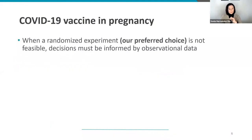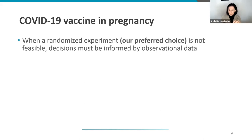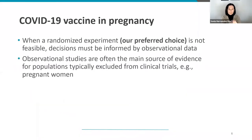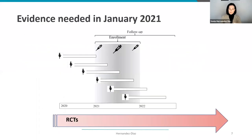So when there is no data from randomized trials — which is, of course, my preferred choice of study design — we need to use observational data. That's when we epidemiologists are in business. This is especially the case for populations that tend to be excluded from clinical trials, such as the elderly, pediatric populations, or pregnant women.